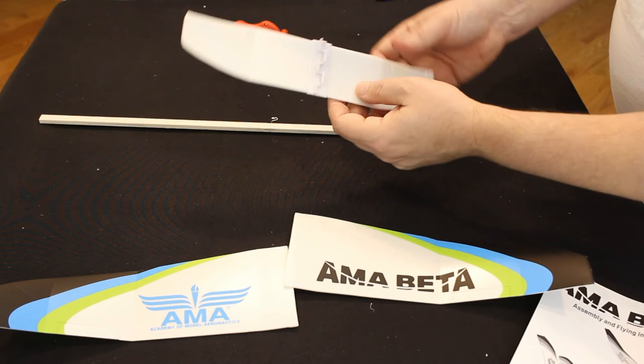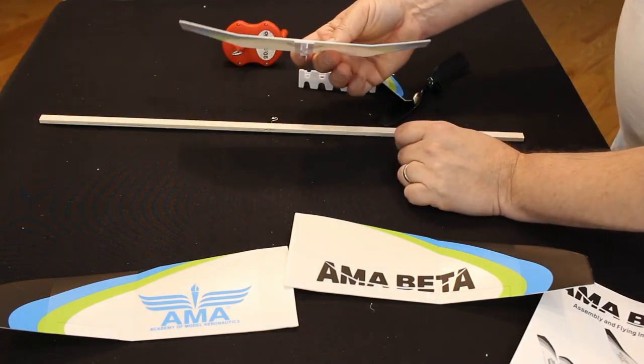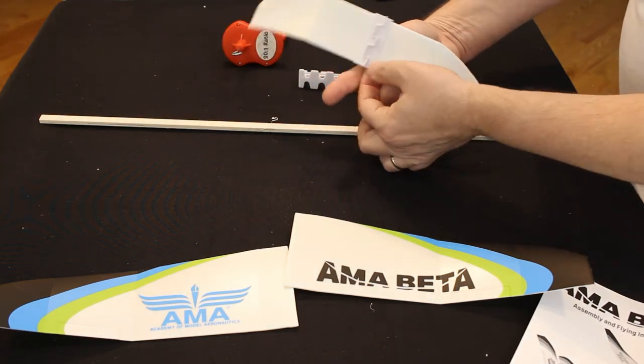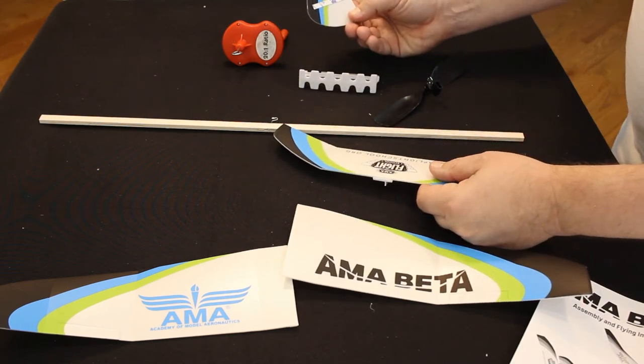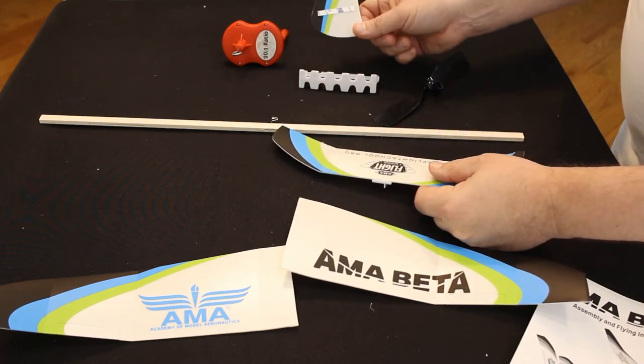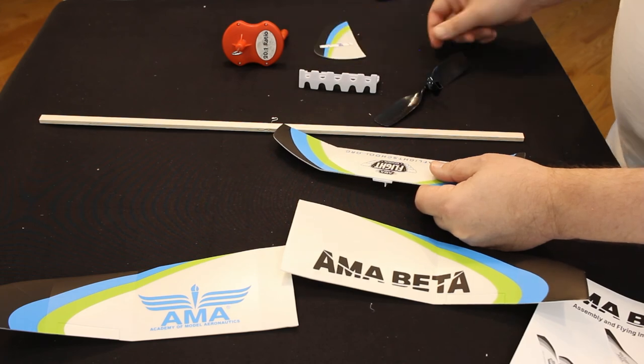And the Beta also has dihedral in the stabilizer, which apparently clips on as well. And then the rudder, it looks like it just goes ahead and glues on accordingly.